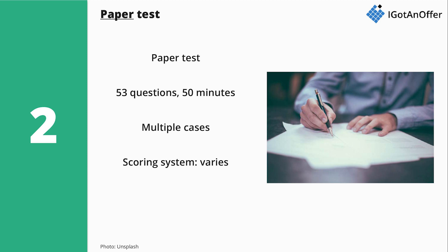The fourth important point is that the scoring system used in the paper test varies between sections. In some cases, you get one point for a right answer; in others, you get two points. For some sections, you will also lose half a point per incorrect answer, but that won't always be the case. At the beginning of each section, BCG will specify how the scoring system works, so you should pay close attention and adapt your strategy from section to section. Finally, the candidates who took this paper test told us that they were not allowed to use a calculator. If this changes in the future, we will update our website to reflect the latest information.